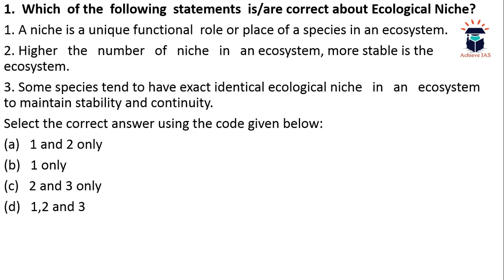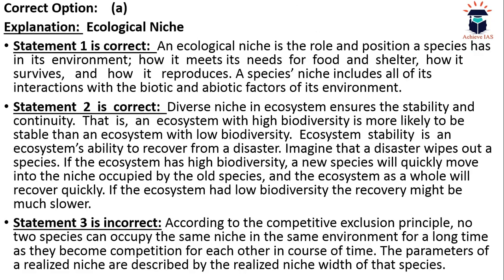The first statement is correct — a niche is basically the unique positional and functional role that a species acquires in an ecosystem. The second statement is also correct: higher the number of niches, the more stable the ecosystem, because more niches means higher biodiversity, and biodiverse ecosystems tend to be more stable. The third statement is incorrect because no two species can have identical ecological niches — this is the fundamental truth. So the answer is A (first two are correct).